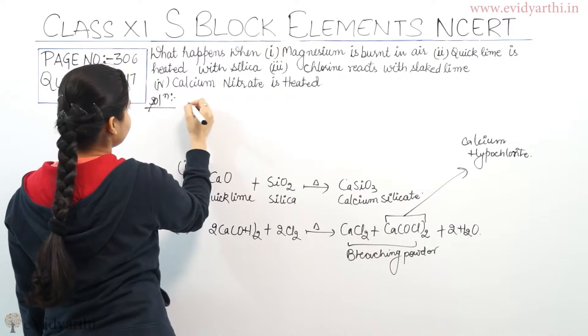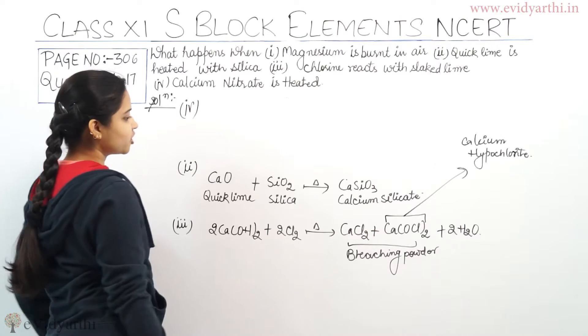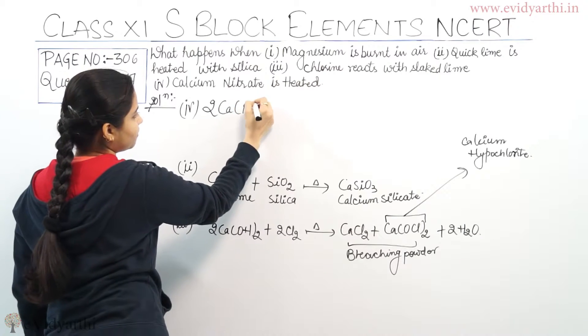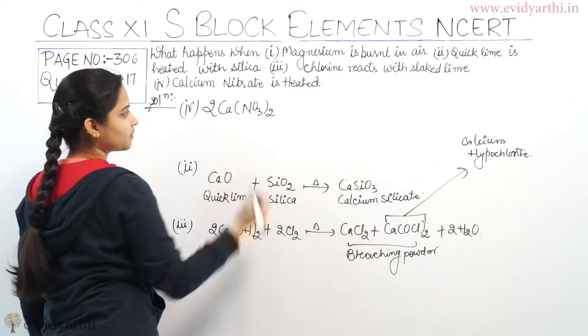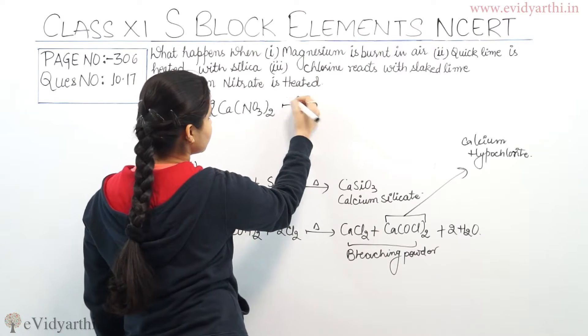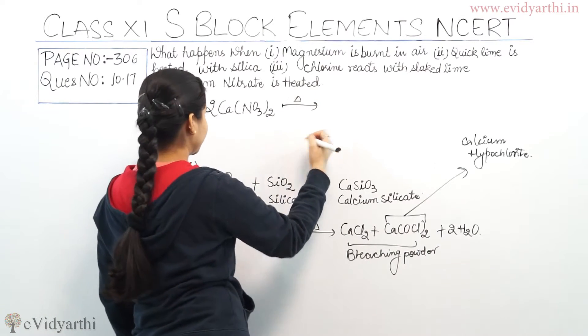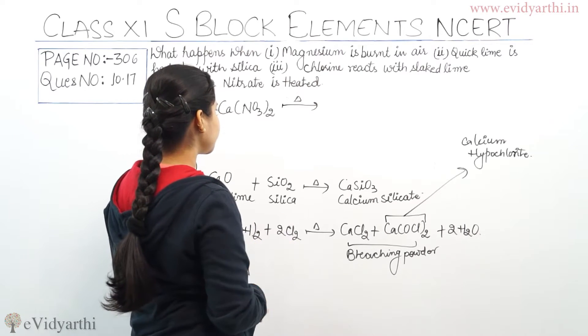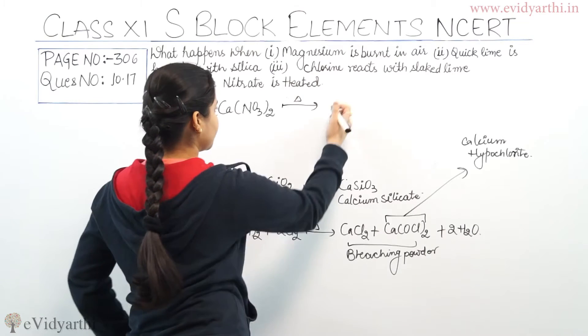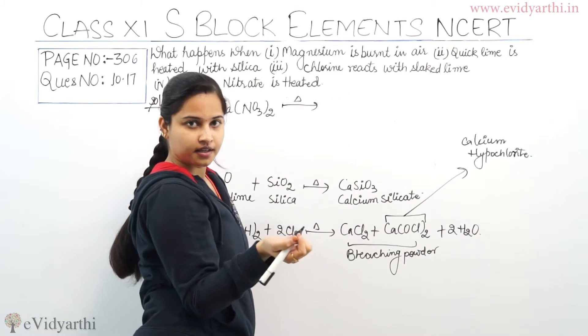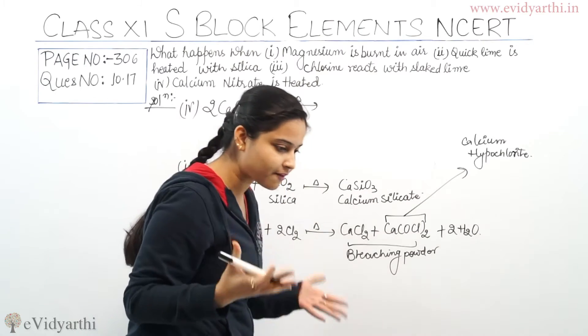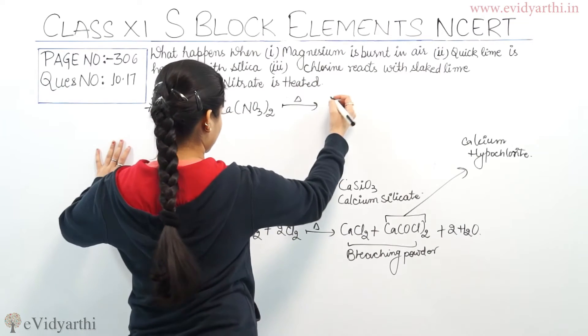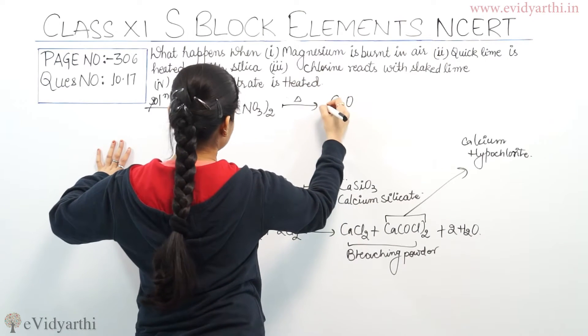Coming to the fourth part: calcium nitrate is heated. Calcium nitrate - Ca(NO3)2. When I heat calcium nitrate, what will I get? We will be getting calcium oxide.